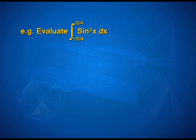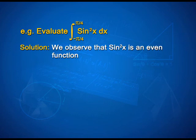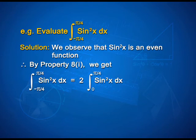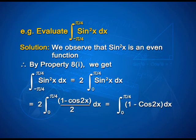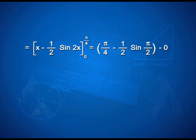Evaluate integral from −π/4 to π/4 of sin²x dx. We observe that sin²x is an even function. Therefore, by property 8, the integral = 2·∫₀^(π/4) sin²x dx = 2·∫₀^(π/4) (1 − cos2x)/2 dx = ∫₀^(π/4) (1 − cos2x) dx = [x − (1/2)sin2x] from 0 to π/4 = π/4 − (1/2)sin(π/2) − 0. On simplification, we get π/4 − 1/2.